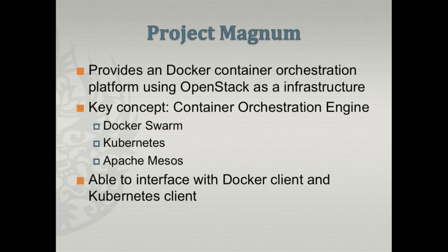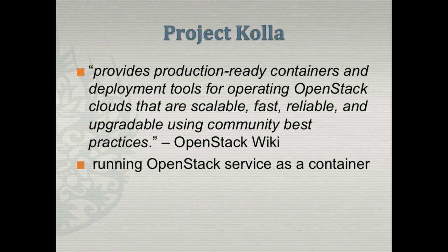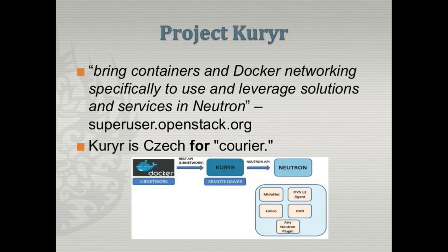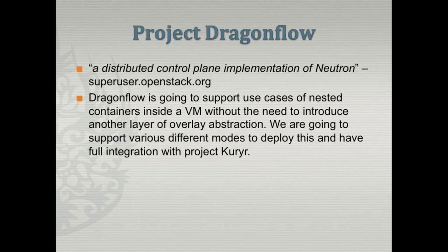There is also Project Kolla, which in essence is about running OpenStack services as containers. And then there is Project Kuryr — as you can see from the picture, this is an interface between the network: libnetwork comes into play again to provide the interface, and then you talk to Neutron. There's also Dragonflow, which is a subproject of Neutron. At this time it has nothing to do with containers, but if you look at its roadmap carefully, containers are part of it.